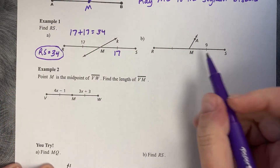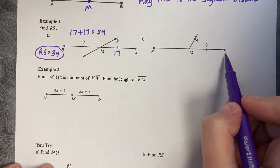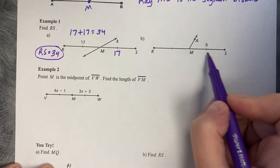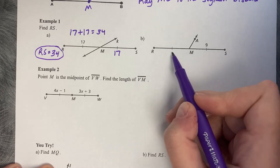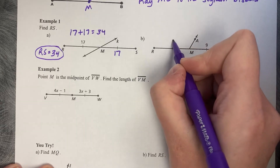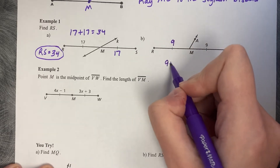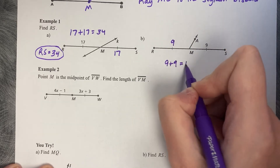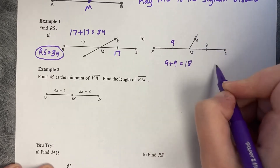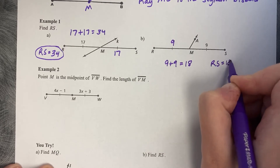Same thing here — we want RS. MS is 9. The same tick mark is also 9. So 9 plus 9 is 18. RS equals 18.